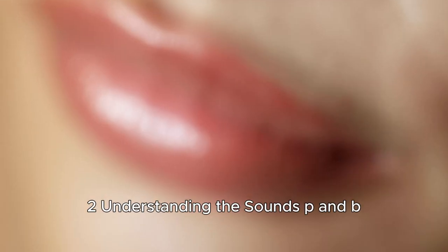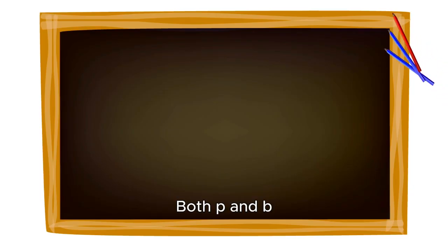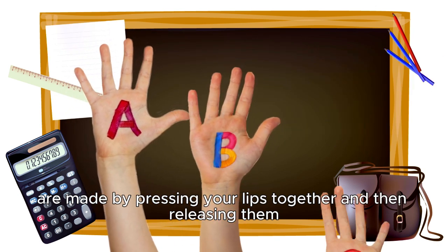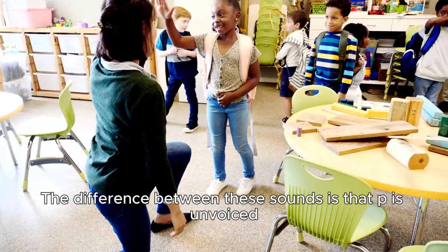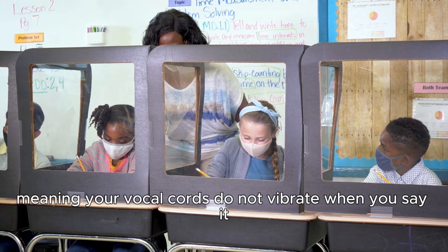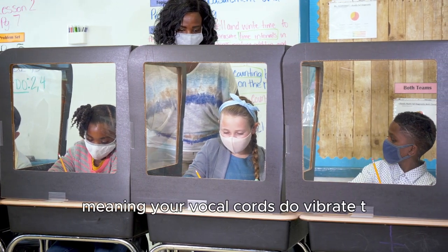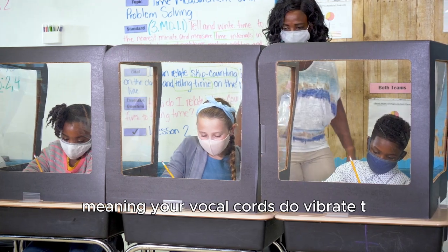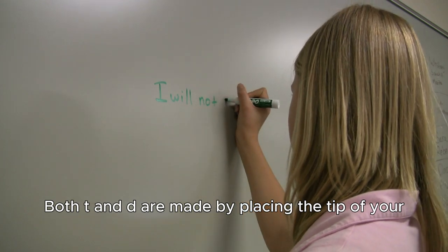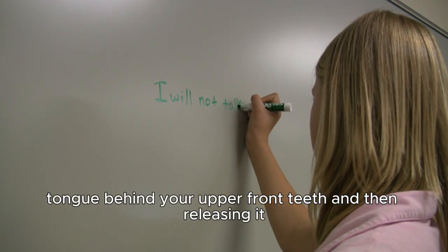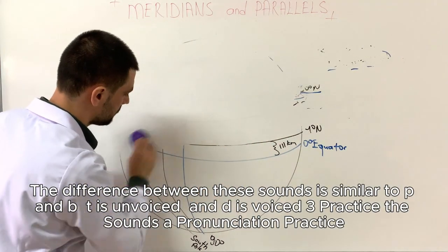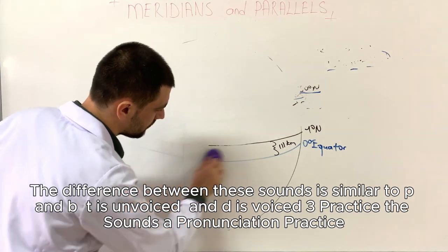Understanding the sounds of P and B. Both P and B are made by pressing your lips together and then releasing them. The difference is that P is unvoiced, meaning your vocal cords do not vibrate when you say it, while B is voiced, meaning your vocal cords do vibrate. T and D: Both T and D are made by placing the tip of your tongue behind your upper front teeth and then releasing it. The difference is similar to P and B. T is unvoiced and D is voiced.